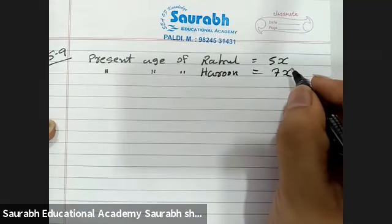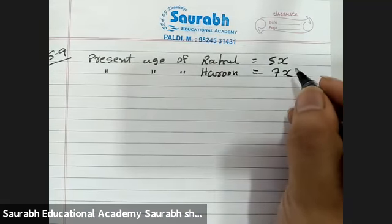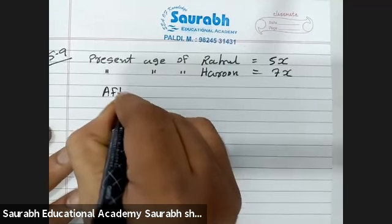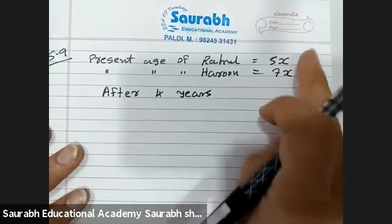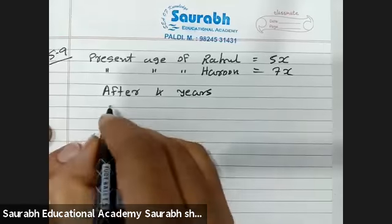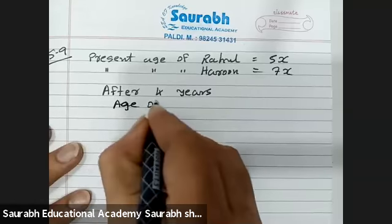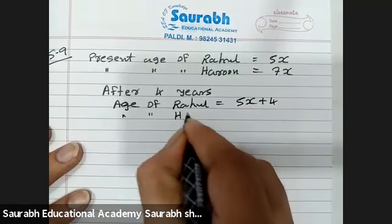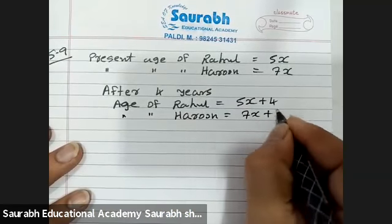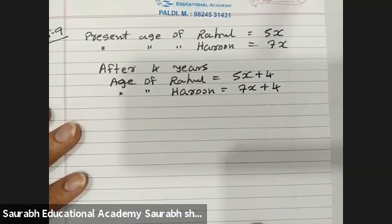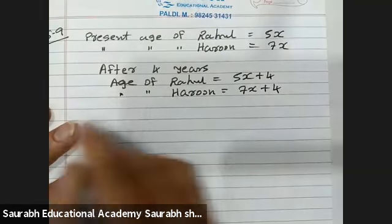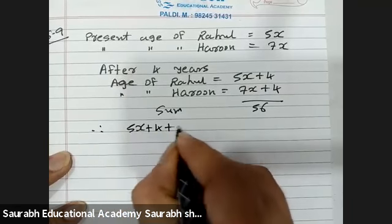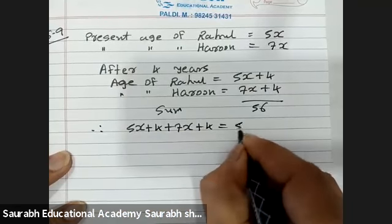After 4 years, we add 4 to each age. So after 4 years, the age of Rahul will be 5x plus 4, and the age of Haroon will be 7x plus 4. The sum of their ages after 4 years will be 56. So the equation is: 5x plus 4 plus 7x plus 4 equals 56.